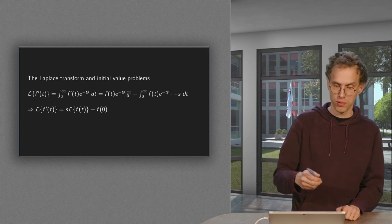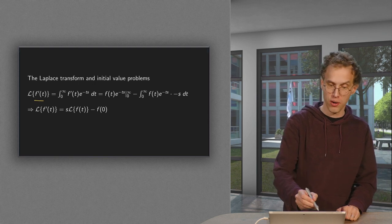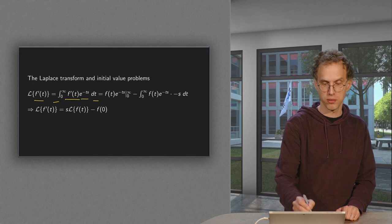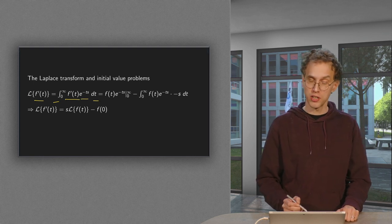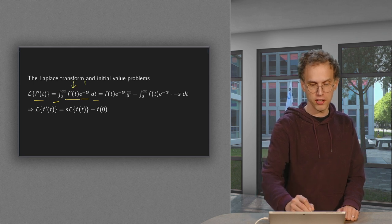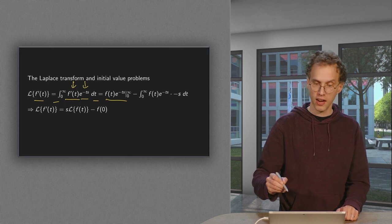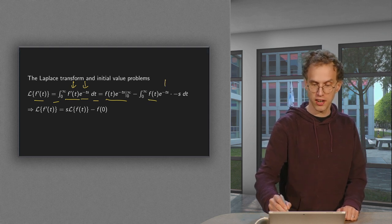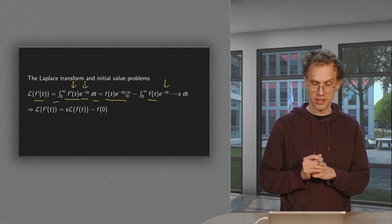So how do we compute the Laplace transform of f prime? We put f prime in, integrate from 0 to infinity, and multiply with e to the power minus ts. Now we use integration by parts: we integrate f and leave the e to the power minus ts, which gives us these terms, minus leaving this here and taking the derivative of e to the power minus ts with respect to t.